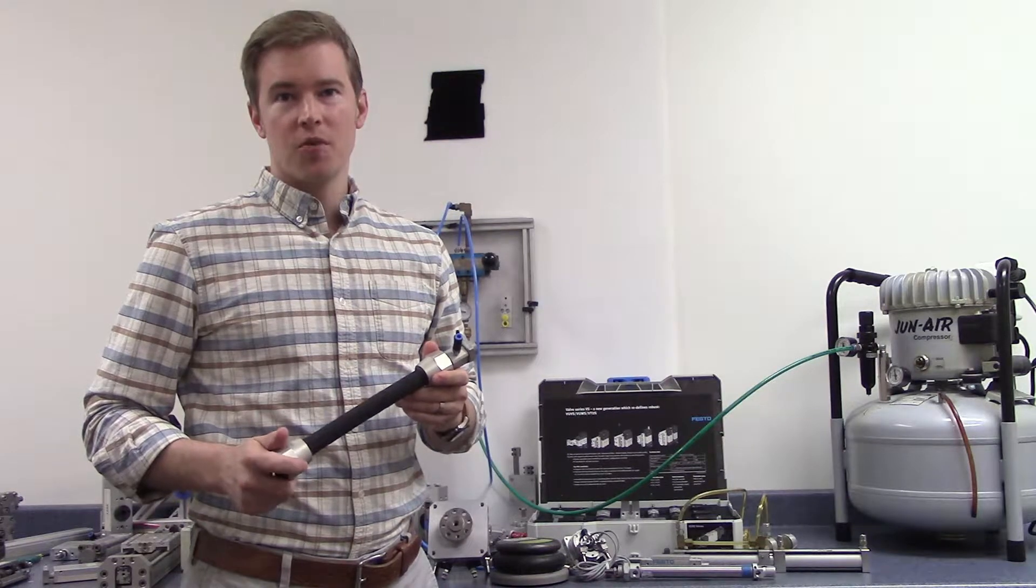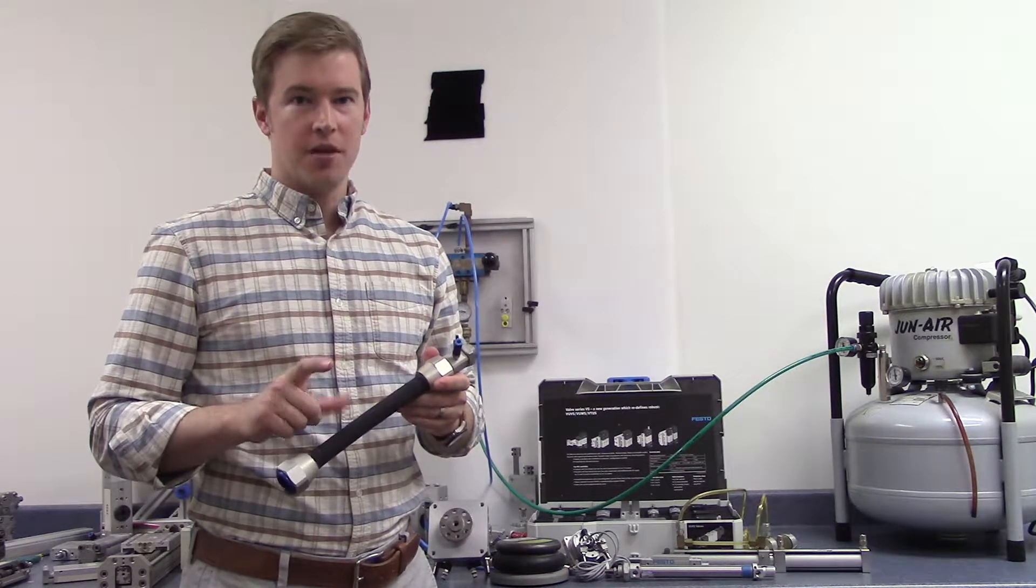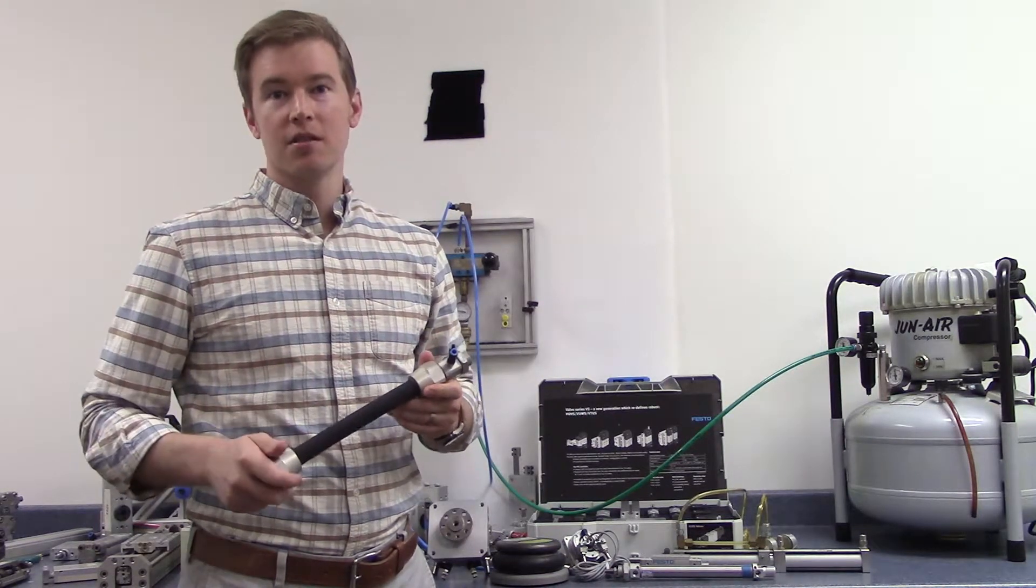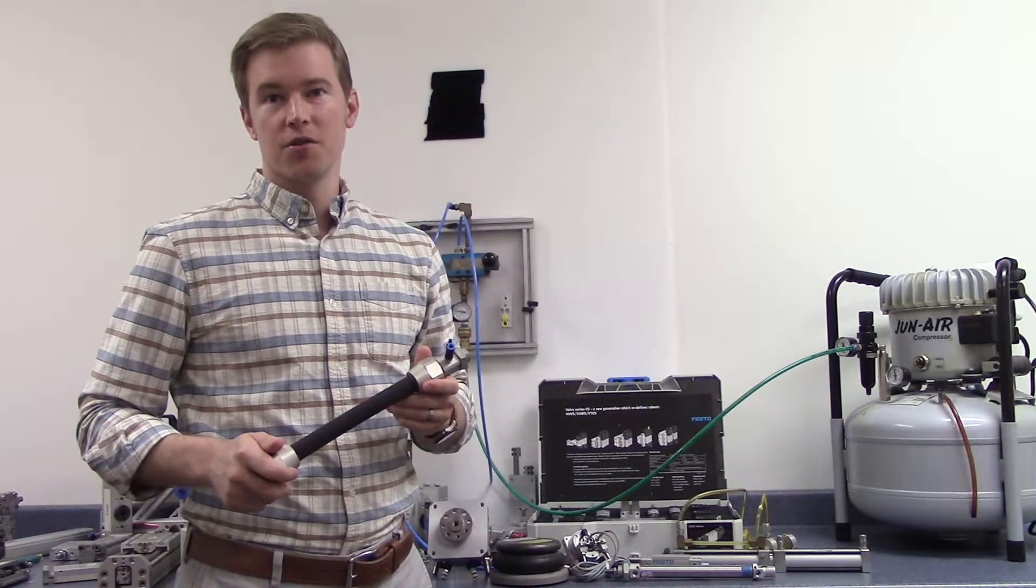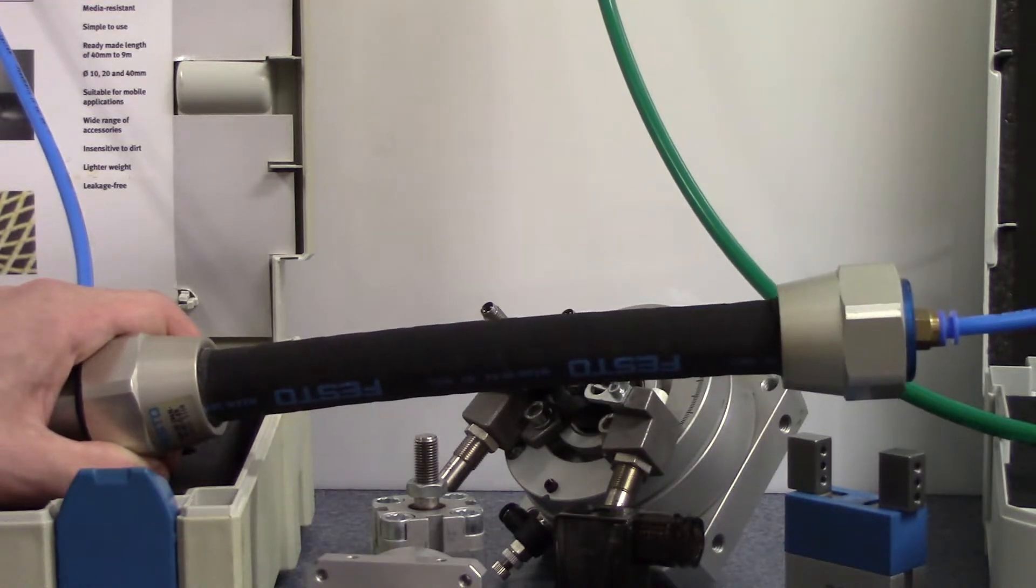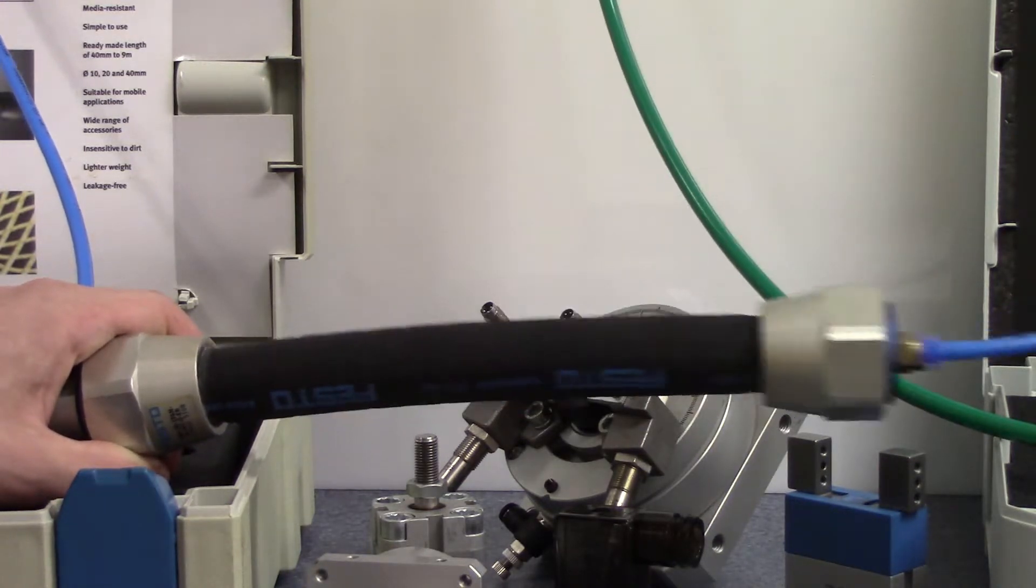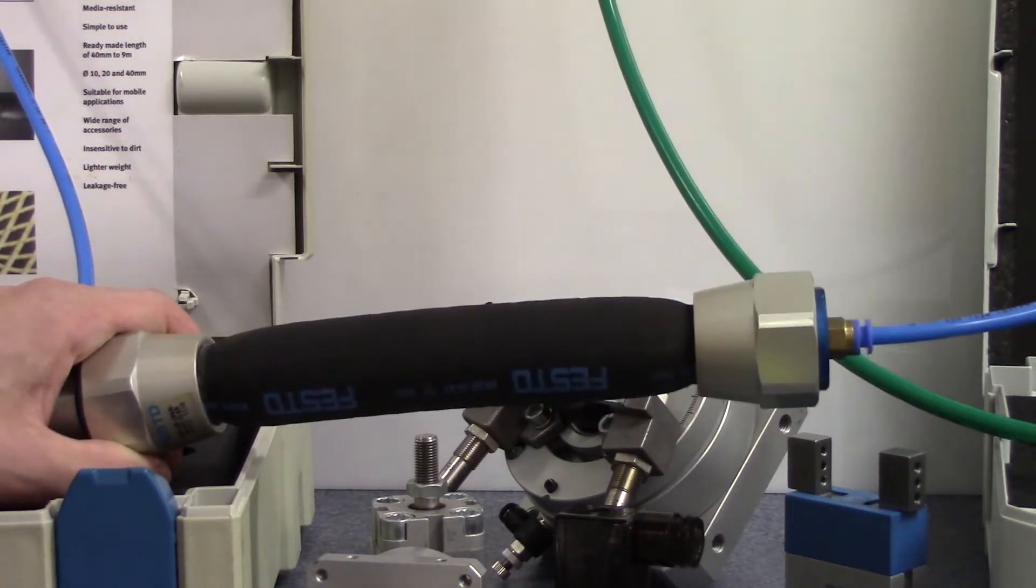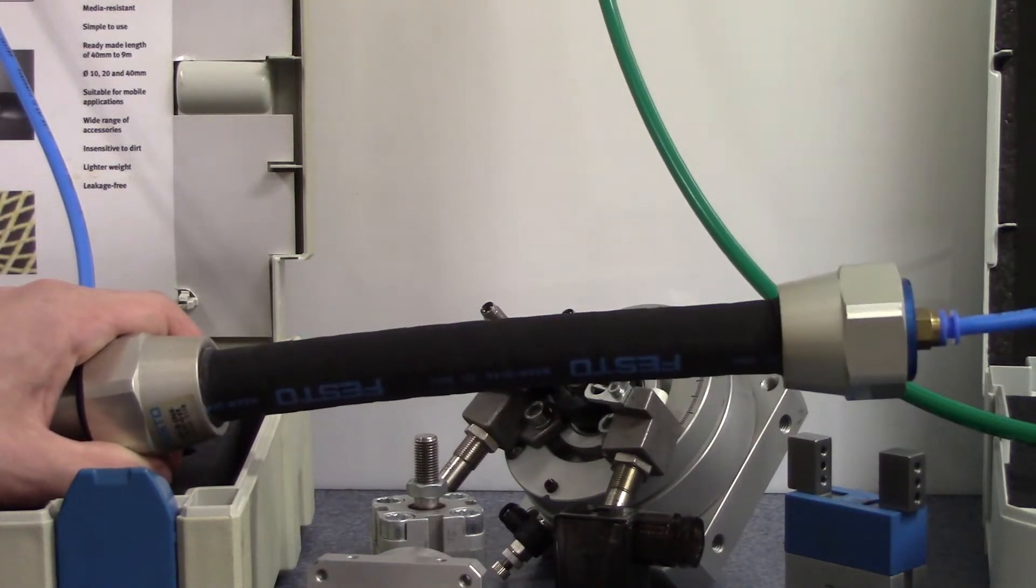When air is supplied to this actuator, it expands radially and shrinks in length, becoming as little as 75% of its original size. Fluidic muscles can be cycled very quickly and can exert very large forces, making them more useful than normal cylinders in certain applications, such as high-speed sorting and emergency braking.